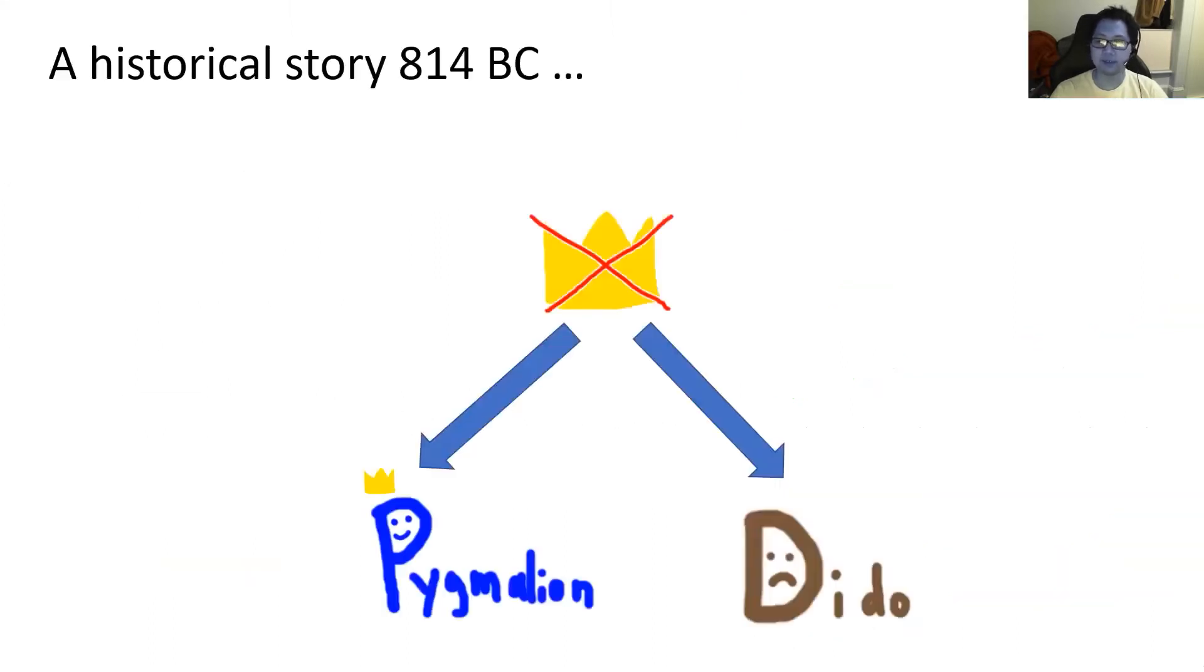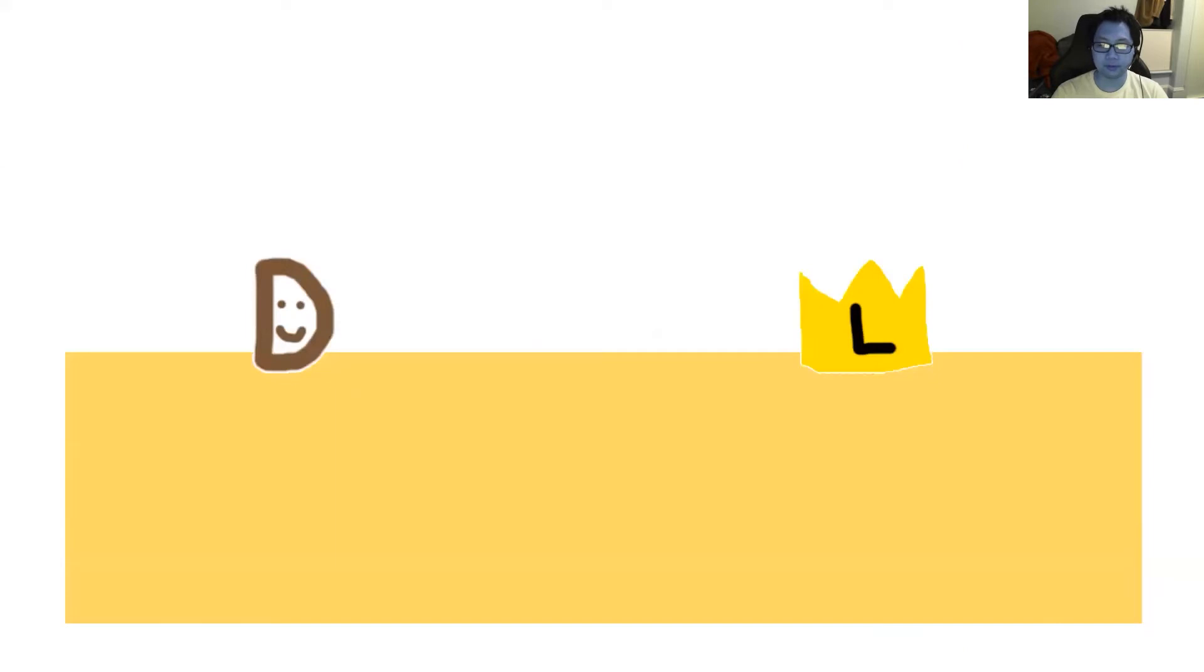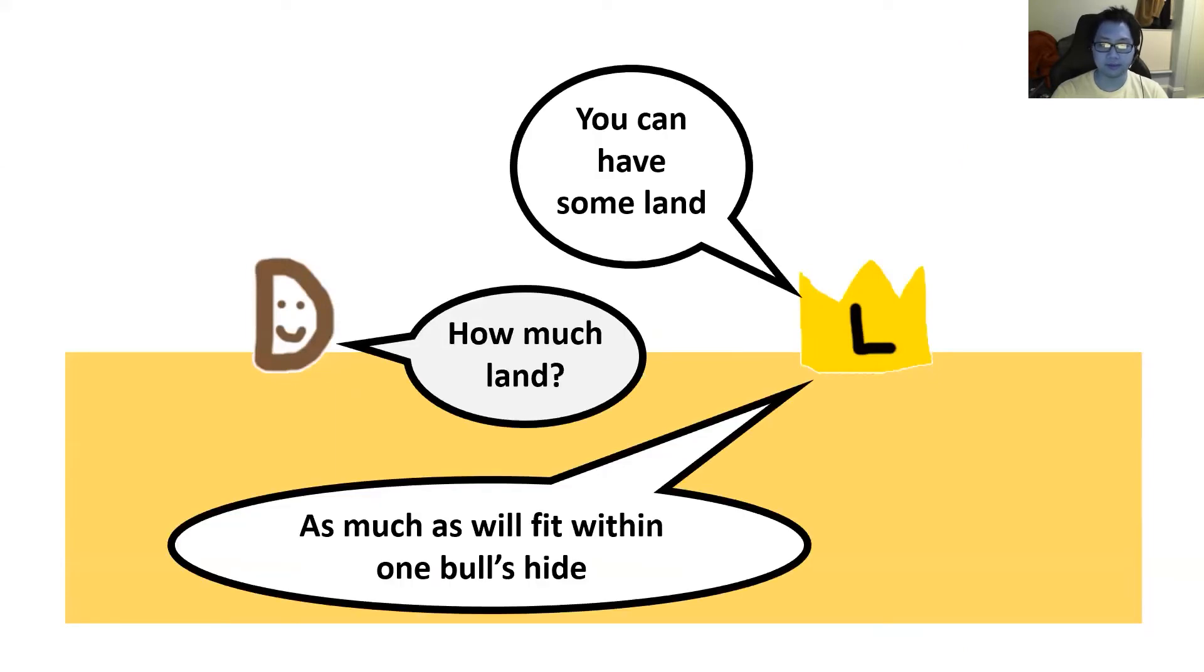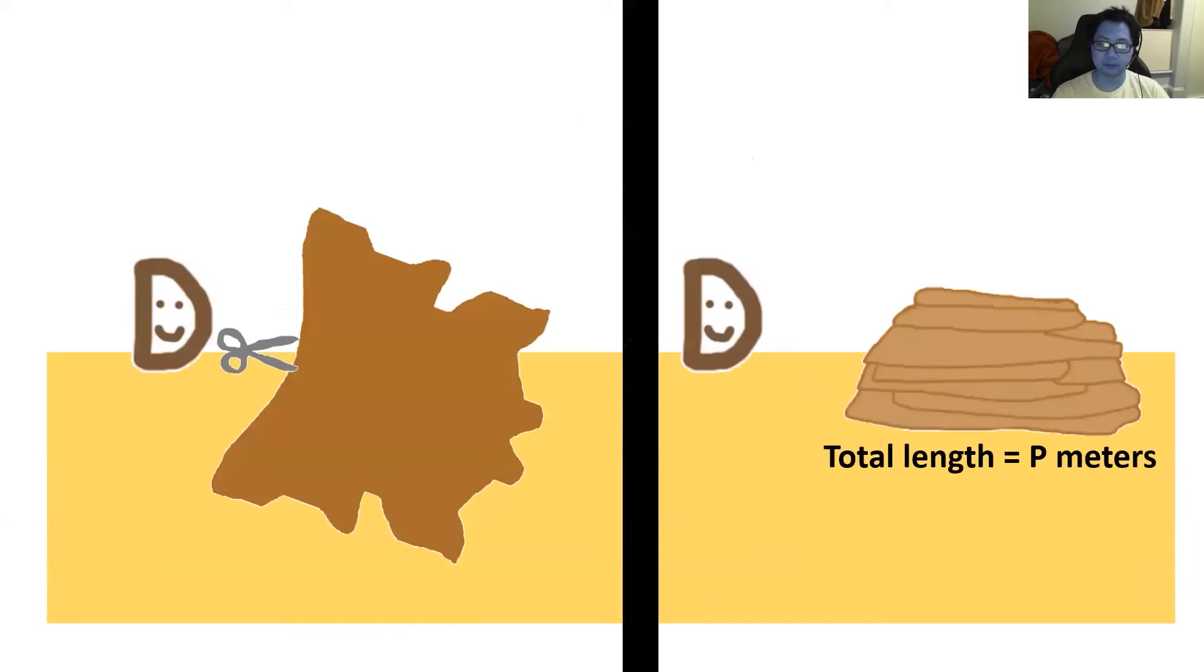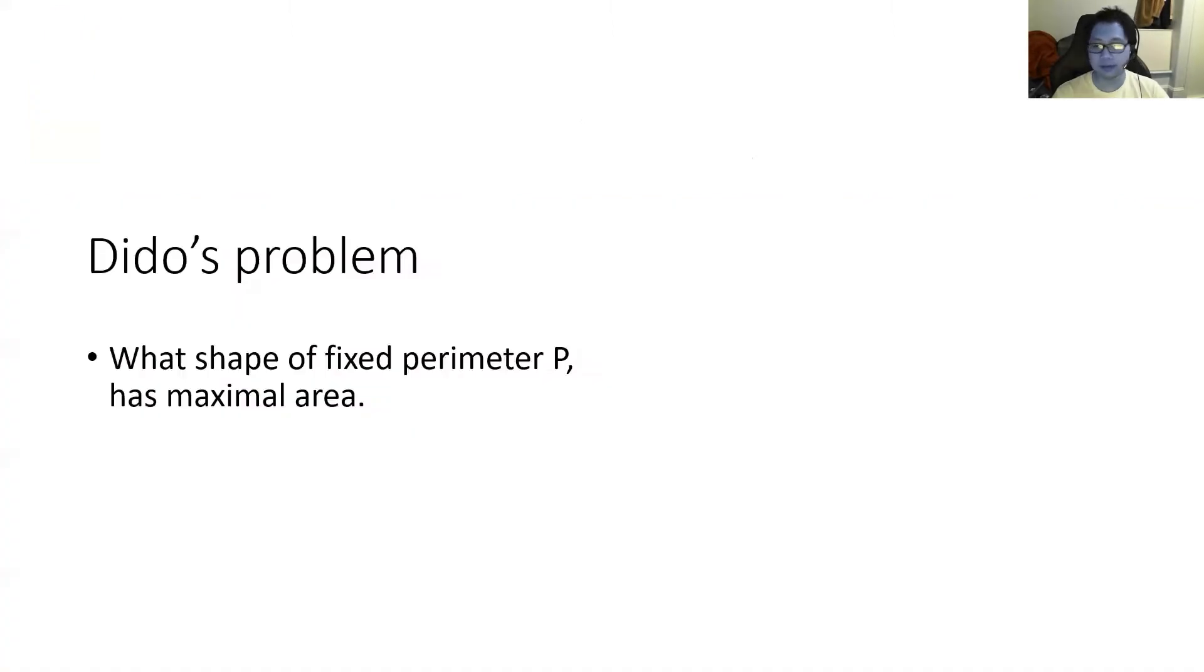Starting in 814 BC, King Tyre died and left his country to his two heirs, Pygmalion and Dido. Pygmalion took the throne for himself, leaving Dido to sail away looking for her own land to rule. Eventually landing somewhere on the coast of North Africa, where she meets King Larbus. King Larbus offers to sell her some land, but instead of saying exactly how much land, he presents her with a geometric puzzle, as was common back then. He offers her as much land as will fit within one bull's hide. So Dido takes her bull's hide and cuts it into strips of total length p meters.